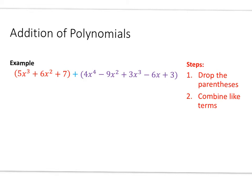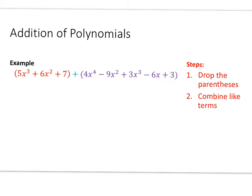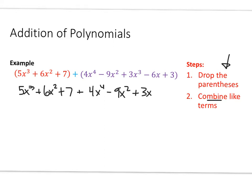The first thing we're going to look at is addition of polynomials. This really doesn't do anything more than adding and subtracting like terms. We have two expressions in parentheses, each one individually a polynomial. When adding polynomials, step one is to drop the parentheses since we're adding there's nothing special to do, and then we combine like terms. So rewriting: 5x cubed plus 6x squared plus 7, plus 4x to the fourth minus 9x squared plus 3x cubed minus 6x plus 3.